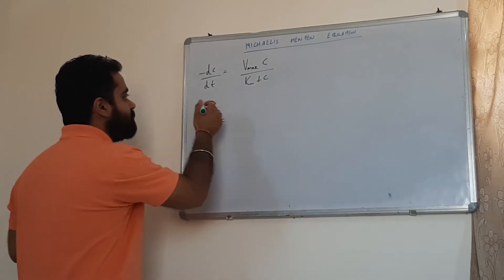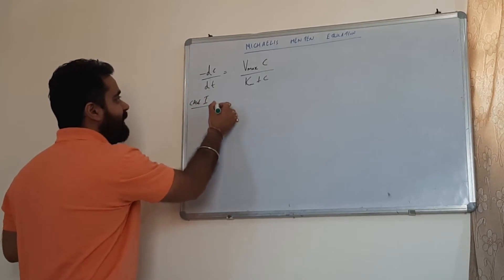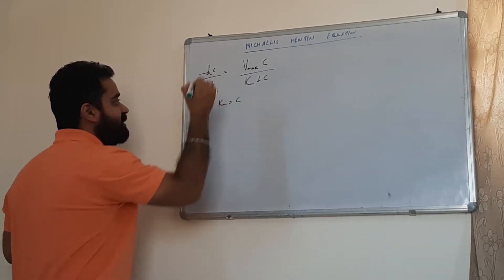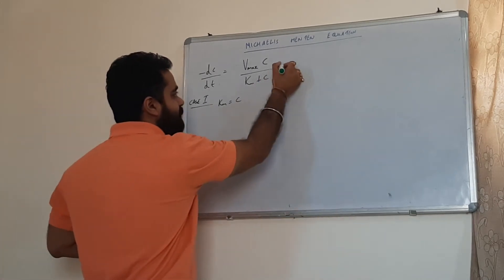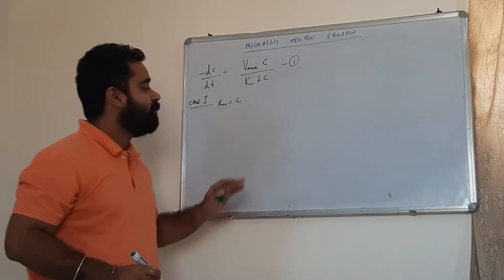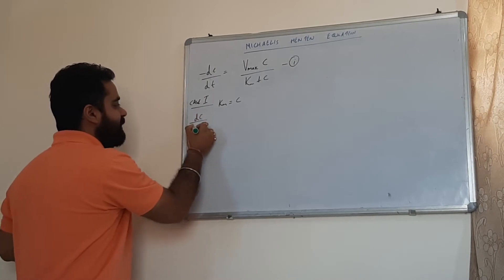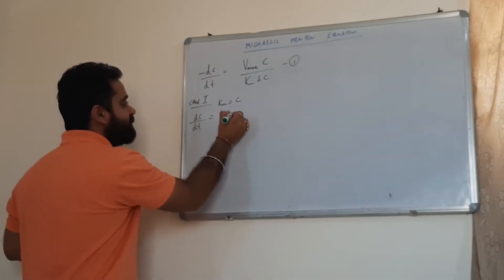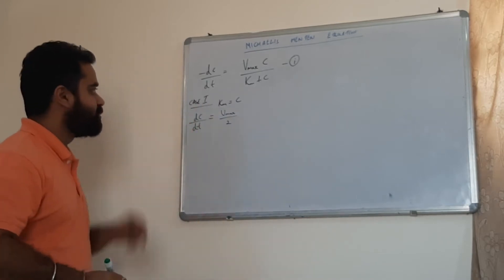We have three possible cases. Case 1: when the value of Km is equal to c. If Km equals c and we substitute this into equation 1, we get minus dC/dt is equal to Vmax divided by 2. This is the first case.